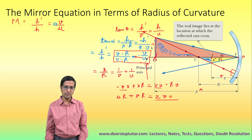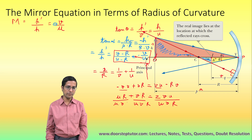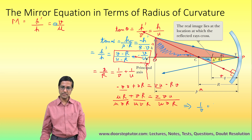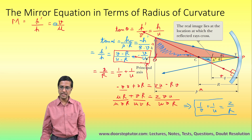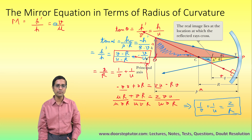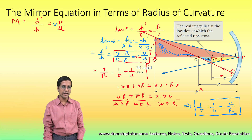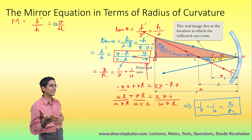Dividing all terms by U, V, and R, the equation simplifies further. This gives us 1 by V plus 1 by U equals 2 upon R. That is the final mirror equation. In an exam, you do not have to write all intermediate steps if you are short on time — you can simply write 'simplifying this equation, we get' and state the result.